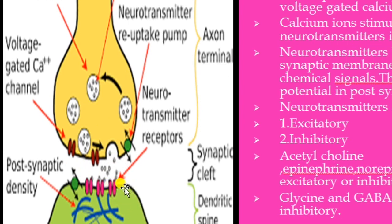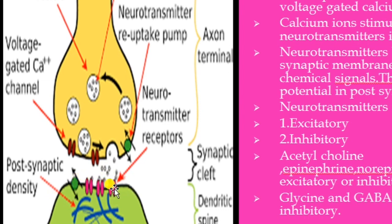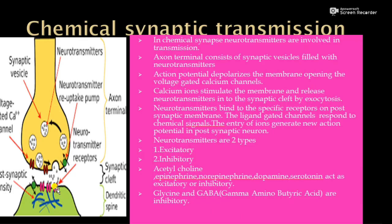The neurotransmitter moves through the synaptic cleft and reaches the postsynaptic membrane of the dendrite. The postsynaptic membrane contains ligand-gated channels that have receptors specific to the neurotransmitter. The neurotransmitter binds with these receptors on the postsynaptic membrane. These ligand-gated channels recognize only chemicals, not electrical impulses.